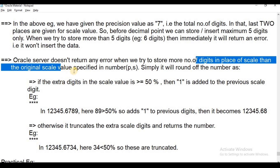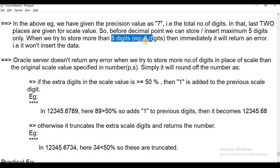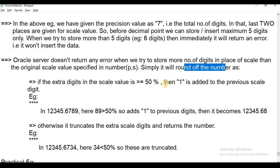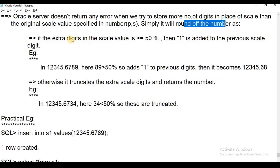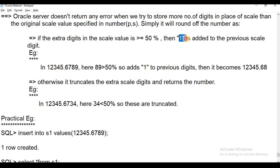If you want to enter extra digits beyond the decimal point into the Oracle Server, and those digits exceed the scale, the server either rounds them off or returns an error for the integer part. For the scale value, if extra digits exist, it will simply round off the number. If you want to save more decimal digits, you would need to increase the scale value.